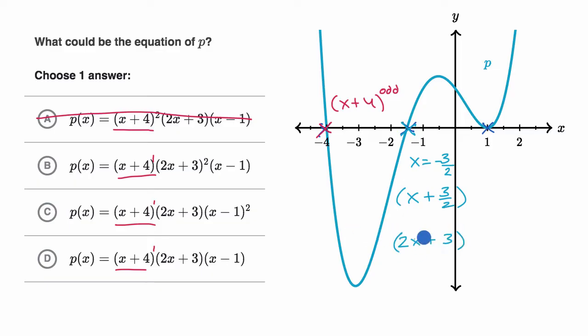And then the next question is, what should be the exponent? Well once again, we have a sign change around x equals negative three halves, so we would expect an odd exponent there. And you can see out of the choices, only two of them have an exponent of one, which is an odd number, while the other one has an even exponent there. So we can rule that one out as well.